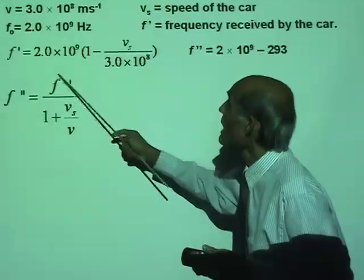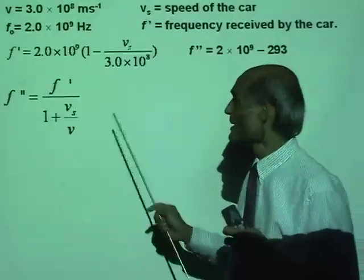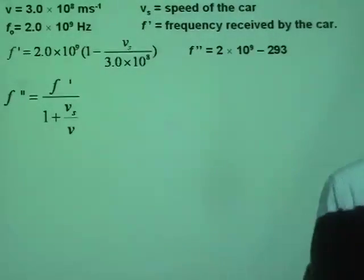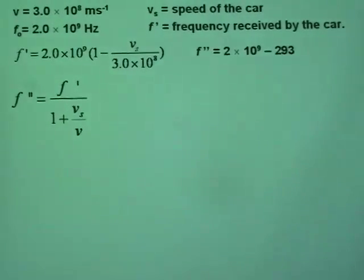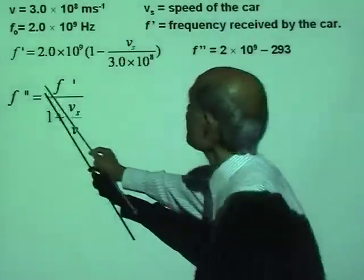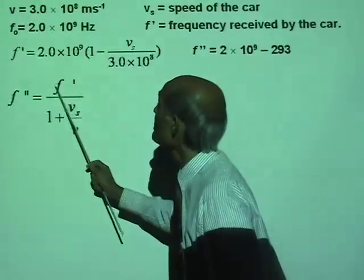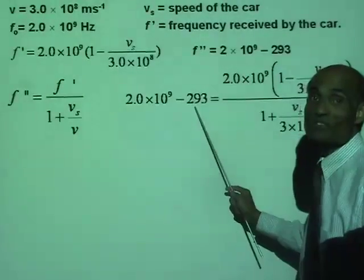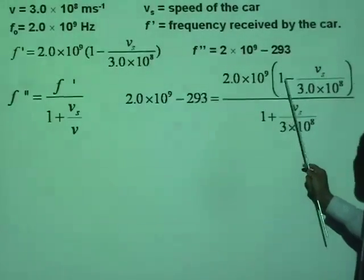This involves some mathematical skill. Replacing F″ with (2 times 10 to the 9 minus 293) and F′ with F₀ times (1 minus V_s over V), we get: 2 times 10 to the 9 minus 293 equals [F₀ times (1 minus V_s over V)] divided by (1 plus V_s over V), where F₀ is 2 times 10 to the 9 and V is 3 times 10 to the 8.